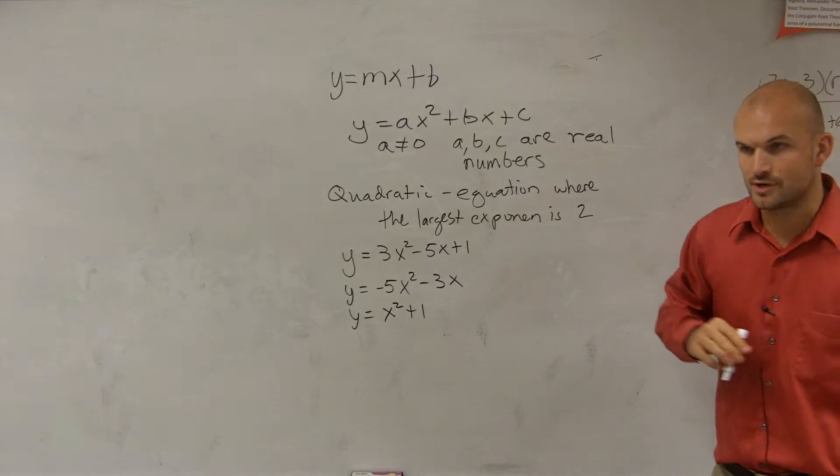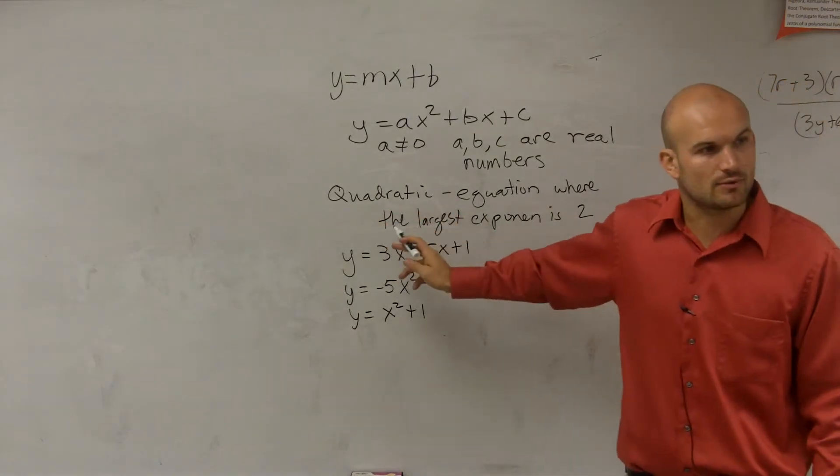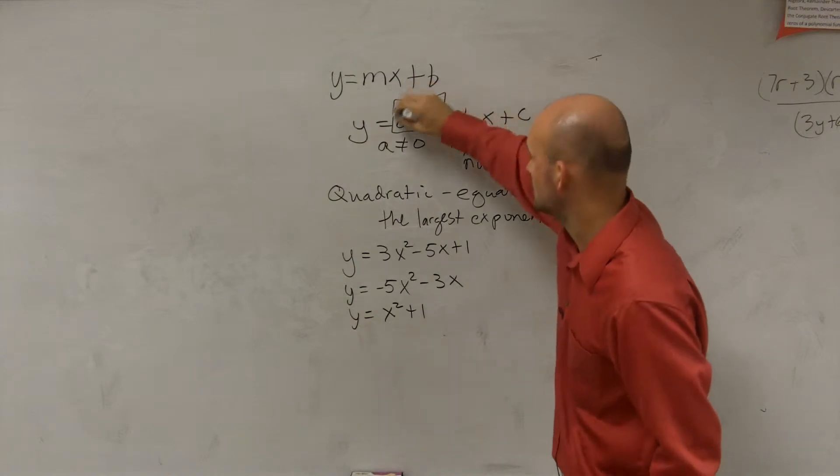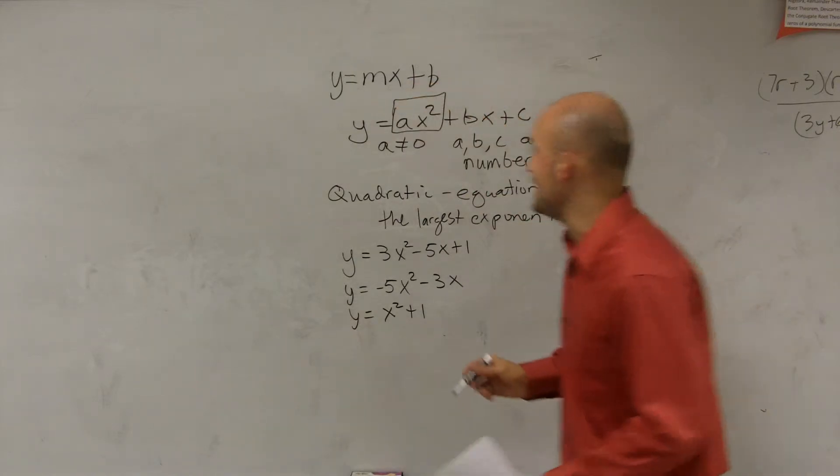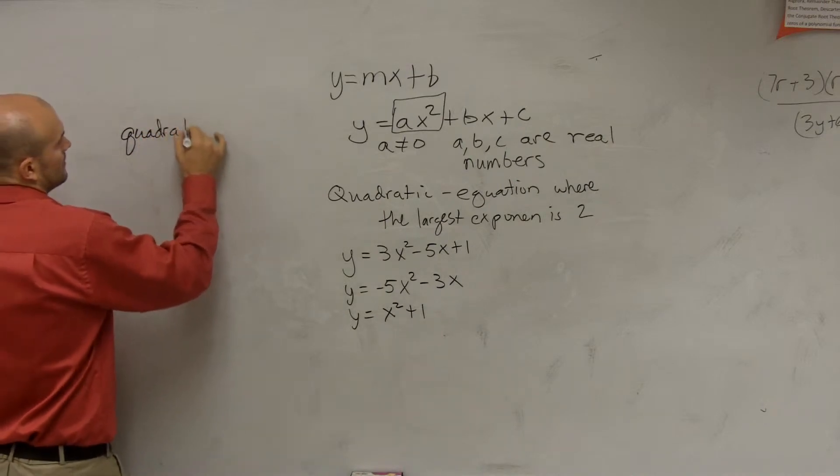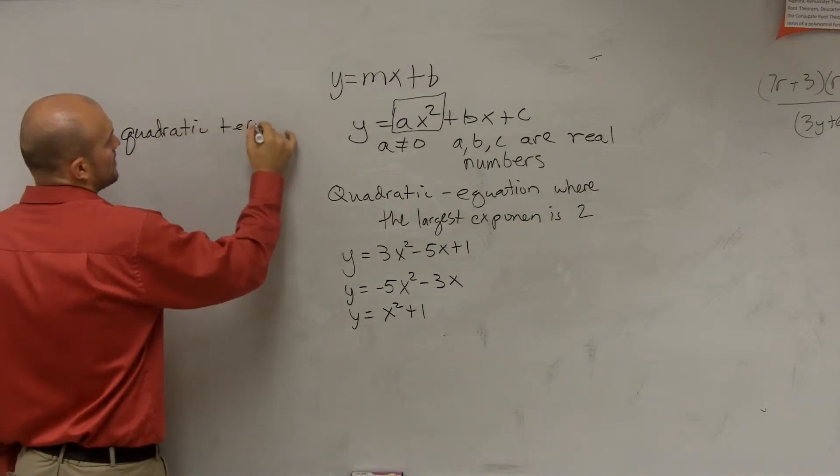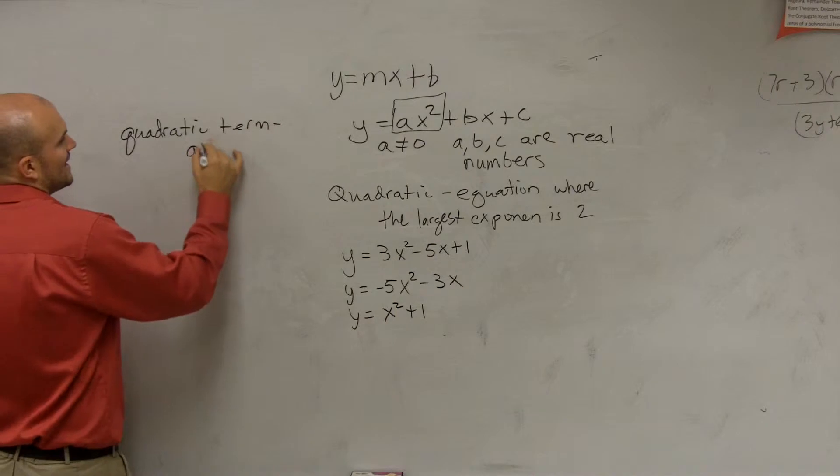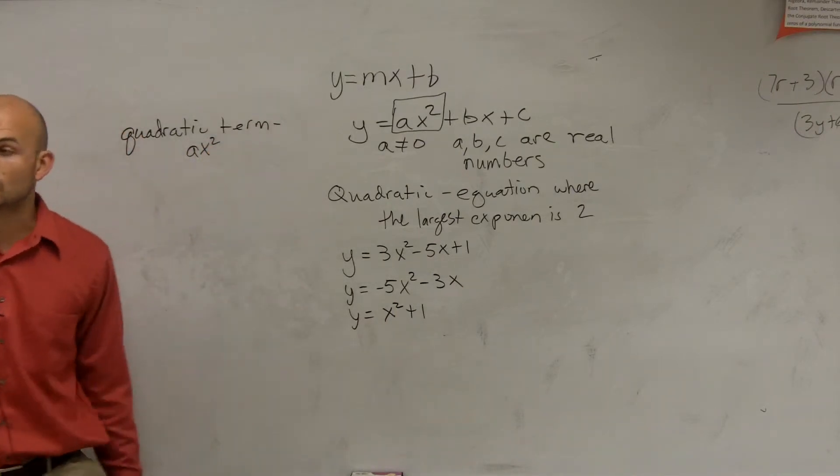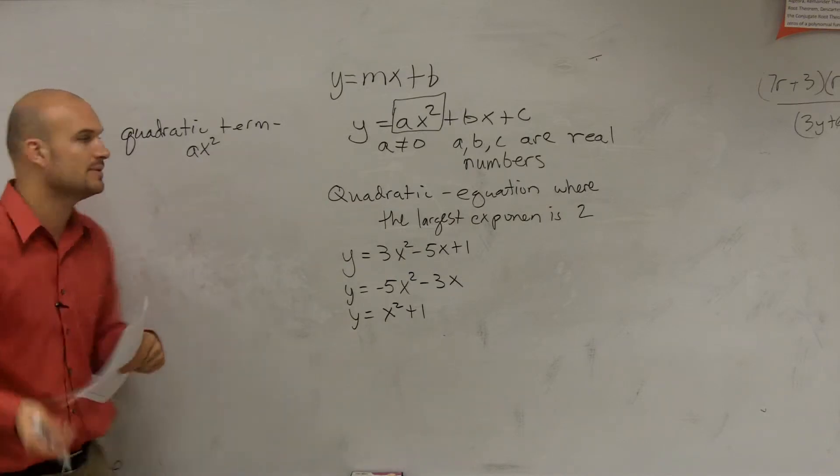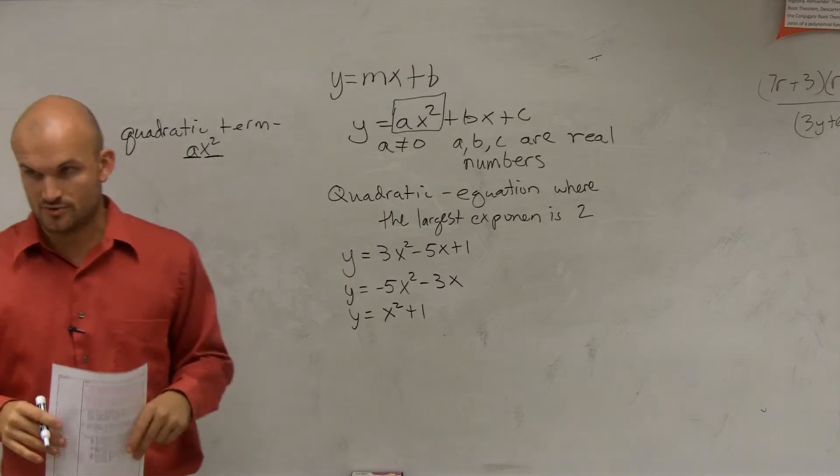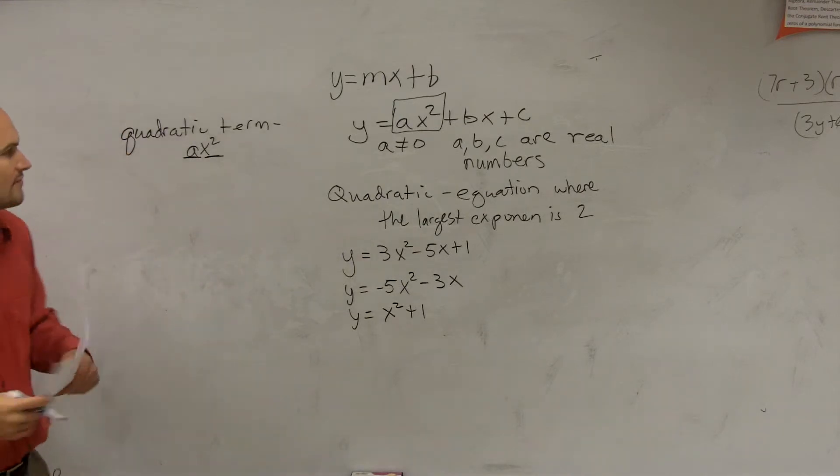For quadratics, we have three different terms. The term where we get the quadratic when you have your x squared is, so you could say your quadratic term is ax squared. And what that means is whenever you have your variable that's squared, that's what we call your quadratic term. Now your quadratic term includes your variable and the coefficient of your variable.